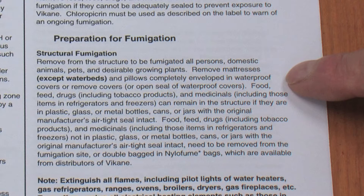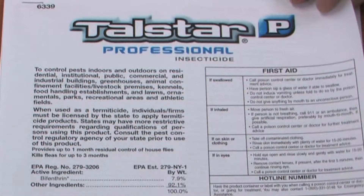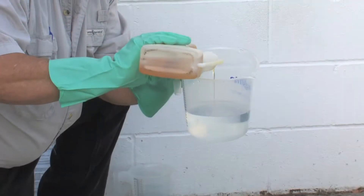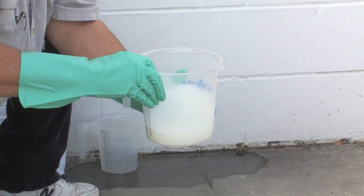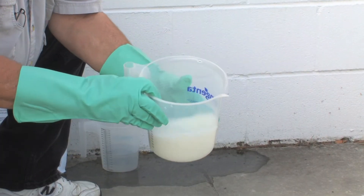On this label it's used for structural fumigation and it will tell you exactly what you have to do, including extinguishing all flames and pilot lights and water heaters. This is Tall Star, which is an emulsifiable product that you'd mix up in water.